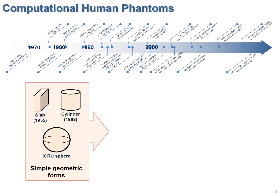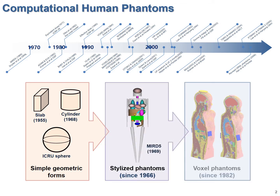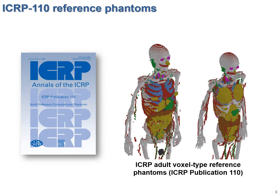In the field of radiological protection, computational human phantoms have been widely used to calculate dose quantities. These computational human phantoms have been developed from very simple geometric forms to stylized phantoms and finally to voxel phantoms. The International Commission on Radiological Protection, in short the ICRP, also defines reference voxel type human phantoms, and by using these phantoms they calculate and provide reference dose quantities. These are the current voxel type reference phantoms for adult male and female described in ICRP Publication 110. Most of the external and internal reference quantities provided in ICRP Publication 116 and 133 were also calculated by using these phantoms.